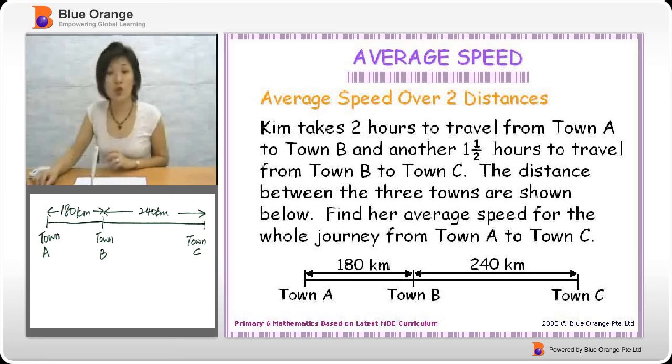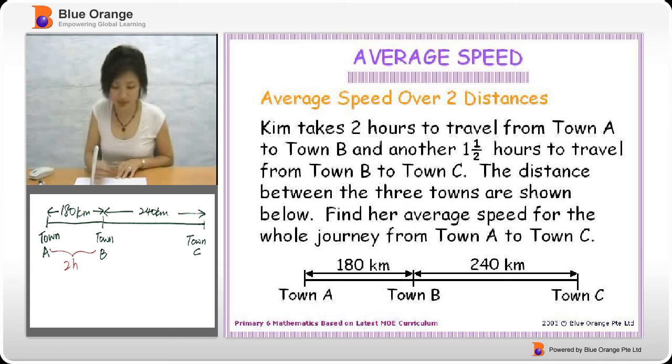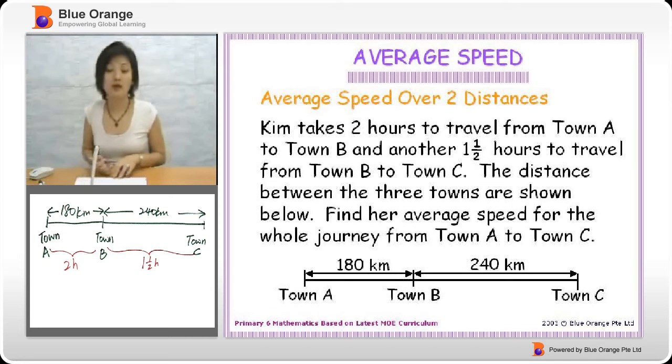They have also given us the time. It says that Kim takes two hours to travel from A to B, so the time here would be two hours. And he took one and a half hours to travel from B to C. From the looks of it, it looks strange. A to B is just short distance, but he took two hours. B to C is a longer distance, but he took a shorter time. It doesn't really matter to us because what's important is that we are looking for the average speed from A to C.